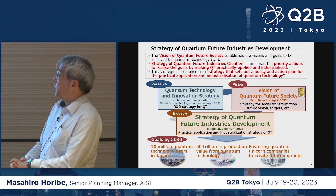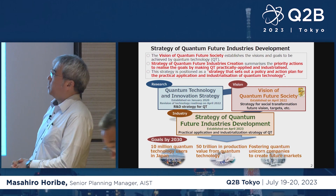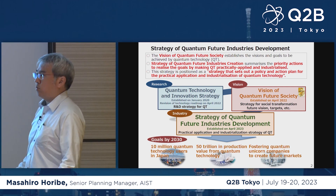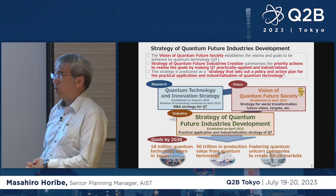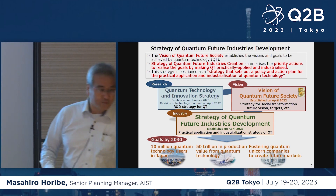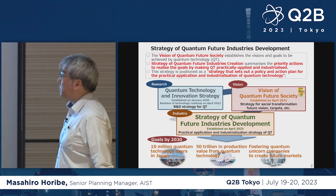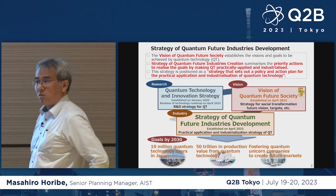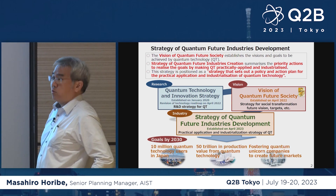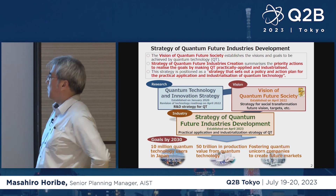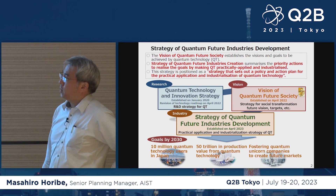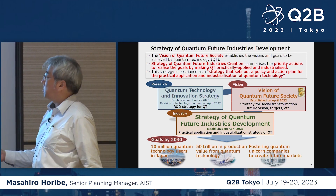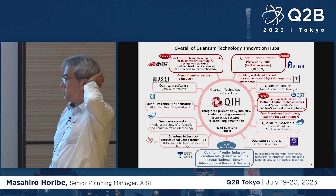As Dr. Ito talked about yesterday, there are three mainstays for the Japanese quantum strategies. The quantum technology and innovation strategy was announced back in 2022 as a strategy. After two years, the situation in society has changed, so the Japanese government came up with a new vision — a vision of quantum future society in 2022. Then, the strategy of quantum future industries development was announced in April this year.